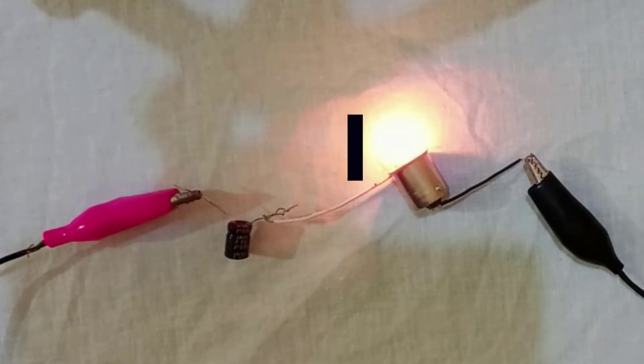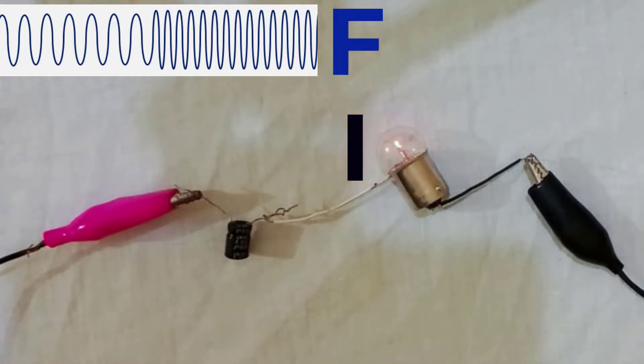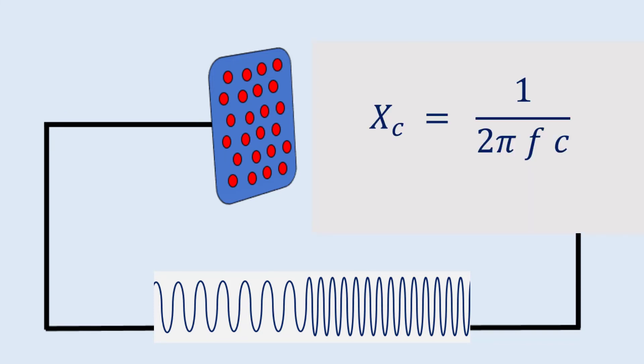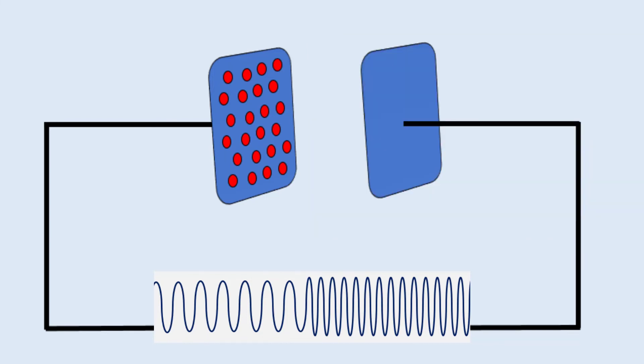AC current through a capacitor will increase with an increase in the frequency of AC current. This is due to the reason that at high frequencies, the direction of the electric field between the plates changes more rapidly, which increases the push-pull on the electrons into the plates. Therefore, capacitive reactance decreases with an increase in frequency.